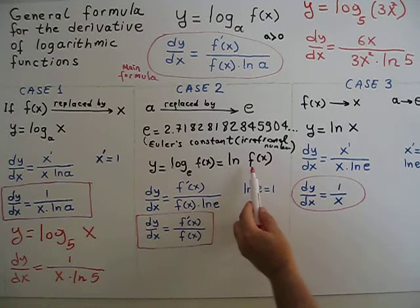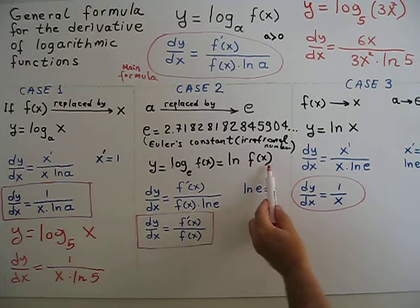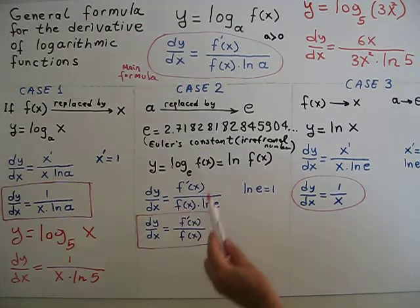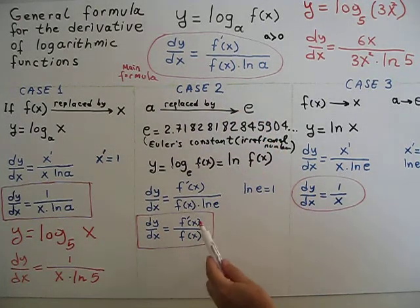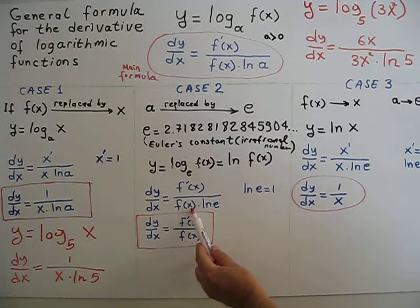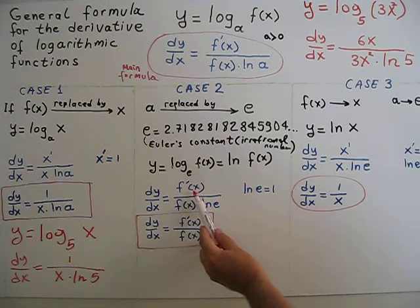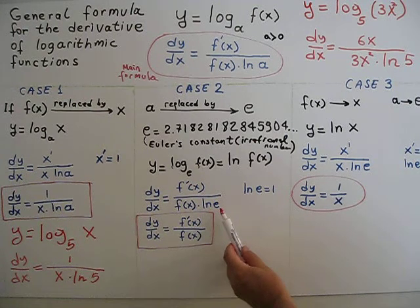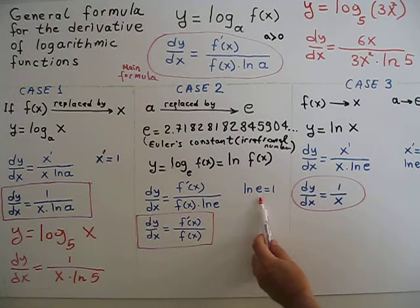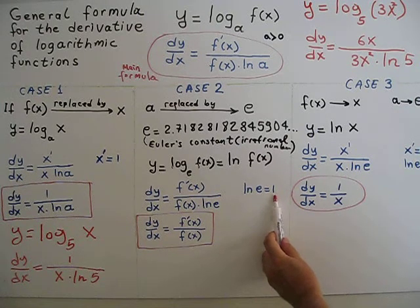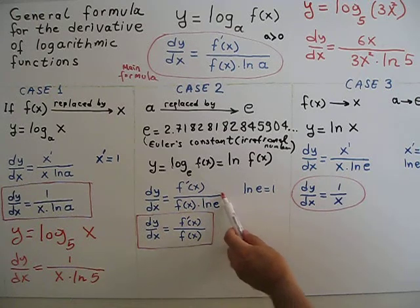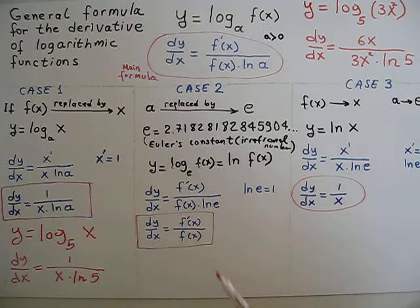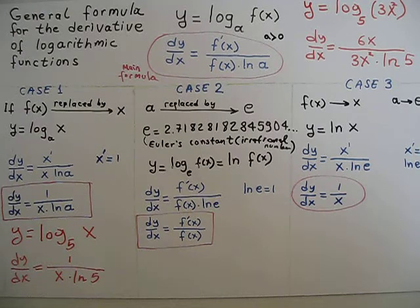We don't write log base e. We write ln simply. This means ln of f of x. If we use again this general formula, f of x goes to denominator, f prime of x goes to numerator, and ln of e to denominator. Since ln of e equals 1, this is 1. We get this formula.